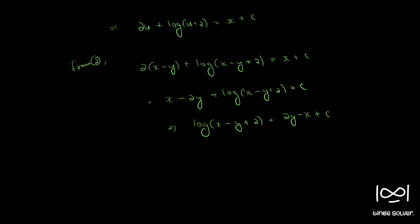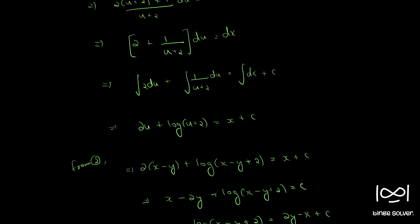If you take exponent, raise these two terms to the power e, so x - y + 2 = e^(2y - x) · c₁, where c₁ = e^c. So this is the solution to question number 106.